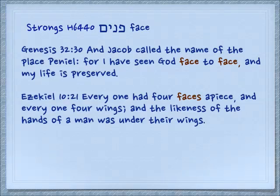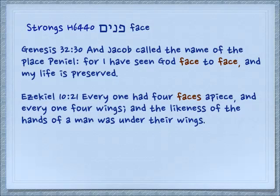Genesis 32.30: 'And Jacob called the name of the place Pnei El,' which means the face of God, 'for I have seen God face to face' — panim el panim — 'and my life is preserved.' Literally, there's one face of him and one face of God, but the word is still plural. In Ezekiel, here's a plural form but it's still going to be the same word, panim. Ezekiel 10.21: 'Everyone had four faces apiece, and everyone had four wings, and the likeness of the hands of a man was under their wings.'